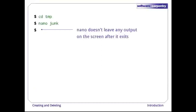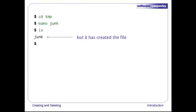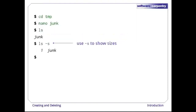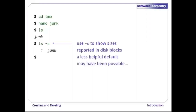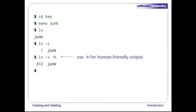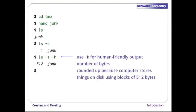Nano doesn't leave any output on the screen after it exits, but ls now shows us that we have created a file called junk. Running ls with the -s flag shows us how large things are. By default Unix reports sizes in disk blocks, which probably isn't the least helpful option imaginable. If we add the -h flag, ls uses more human-friendly units. Here, 512 is the number of bytes the file takes up — more than we actually typed, because the computer rounds sizes up. The smallest unit of storage on disk is typically a block of 512 bytes.